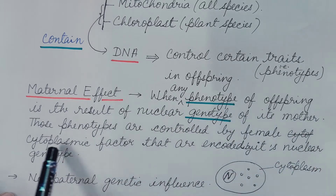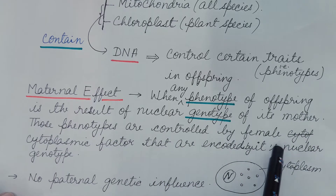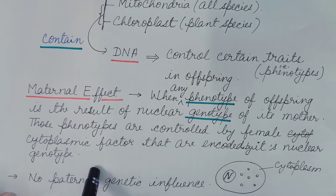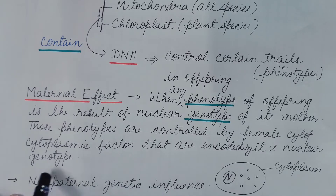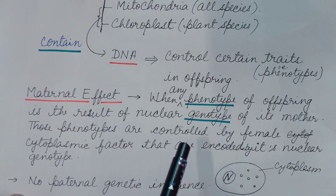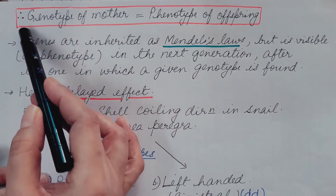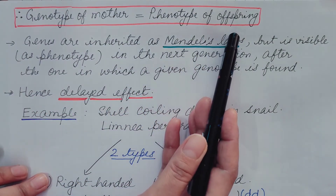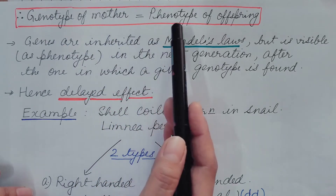When any phenotype of an offspring is the result of the nuclear genotype of its mother, those phenotypes are controlled by the female cytoplasmic factors encoded by its nuclear genotype — this is known as maternal effect. There is no paternal genetic influence, because the cytoplasm comes from the mother or female gamete, not from the father or male gamete in most cases. The genotype of the mother determines the phenotype of the offspring, not the genotype of the offspring itself.